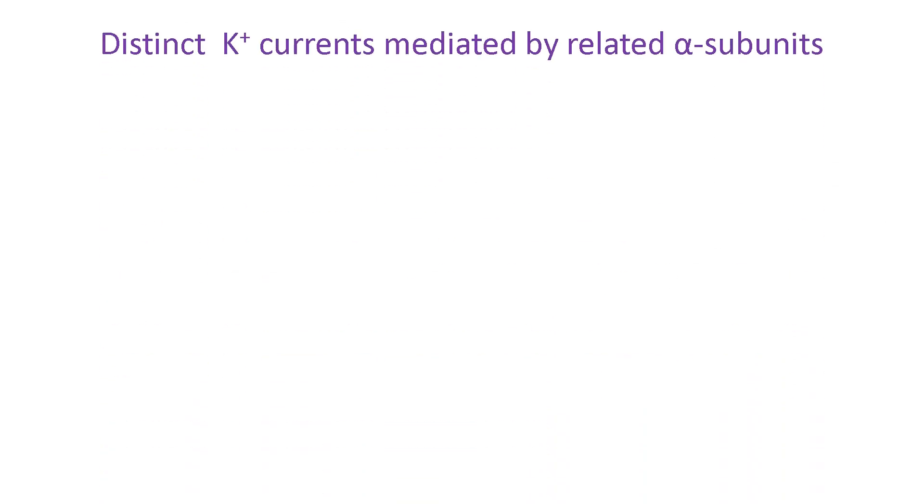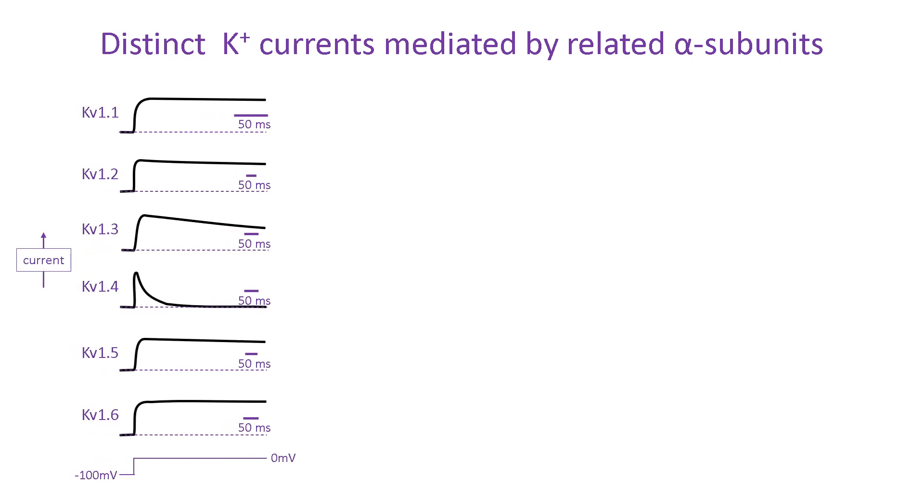Potassium channels are a large, diverse group of proteins. They are encoded by many different genes and the functional channel is often made up of multiple subunits. This impacts on the behavior of currents recorded from potassium channels which can vary substantially. These traces typify current waveforms recorded from the main pore-forming alpha subunits, KV1.1 to KV1.6, which make up some of these diverse channels. All are activated by depolarization. Here, a voltage step from minus 100 to 0 millivolts. But, they show different rates of activation and inactivation.